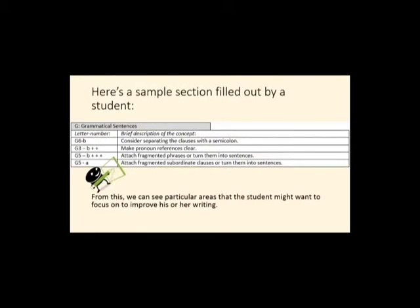So here's a sample section filled out by a student, and you can see this is the G section. The student seems to be having particular trouble in the G5B section: attach fragmented phrases or turn them into sentences. So that would help the student, and potentially an instructor or a tutor, to see which areas the student would want to focus on and get help on.